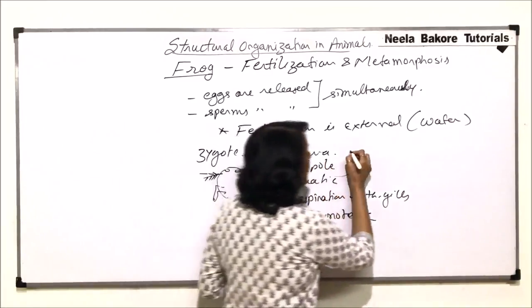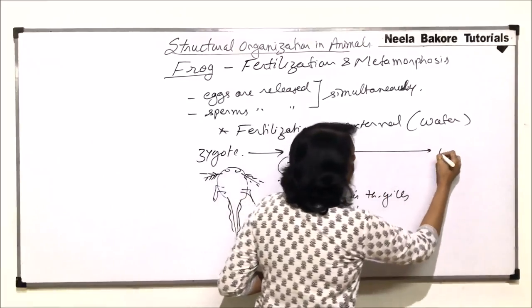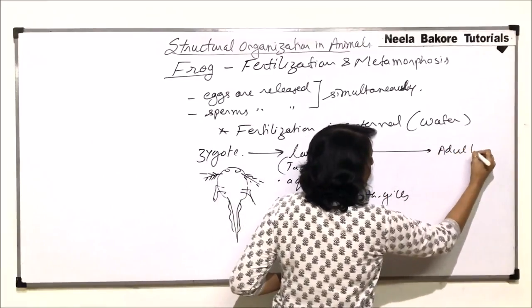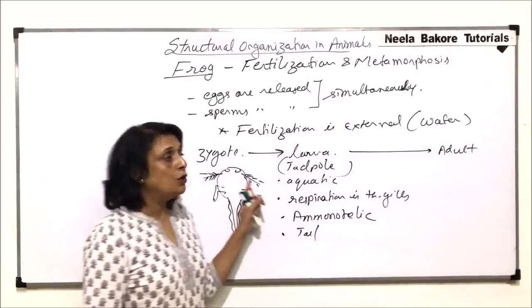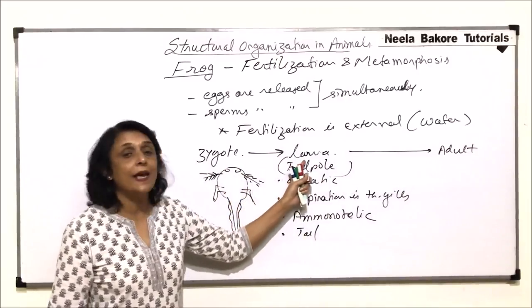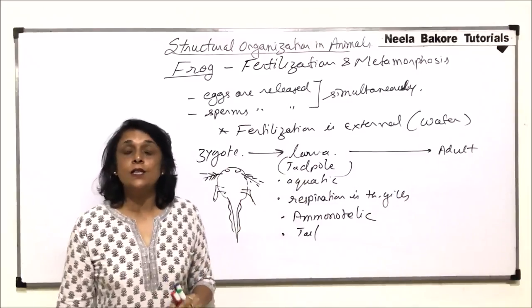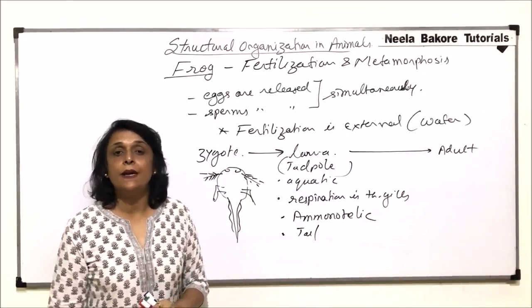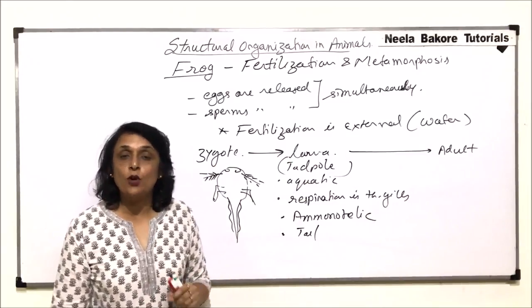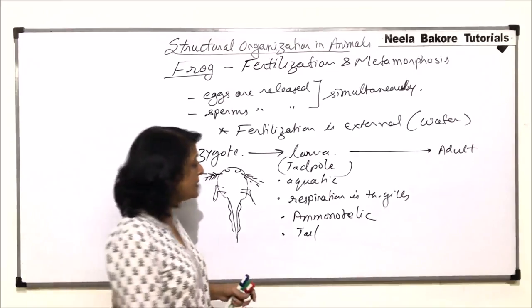So it has a very well-developed tail. So from this larva, now we get the adult. That means during metamorphosis, there is a larval stage. And if there is a larval stage, then the development is termed as indirect, or metamorphosis is termed as indirect.